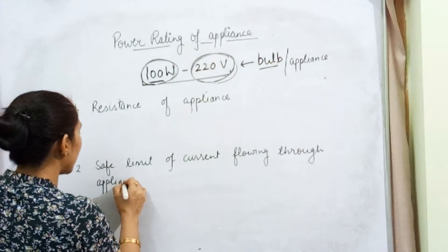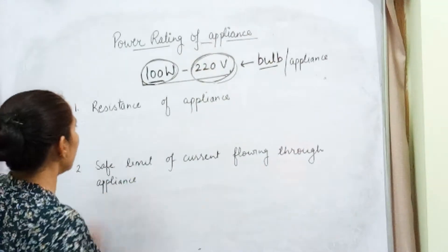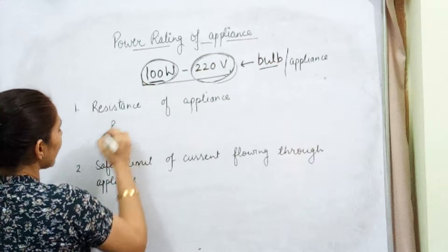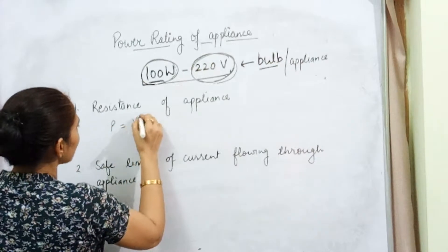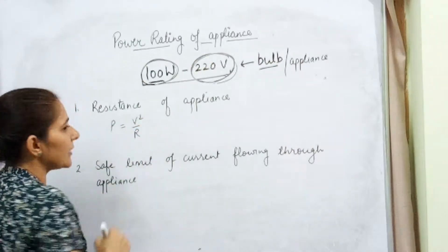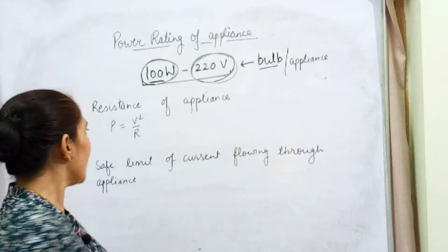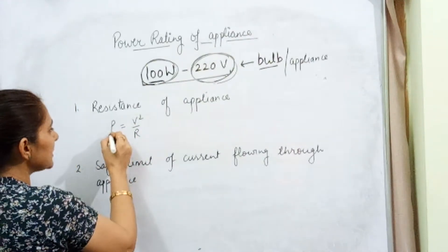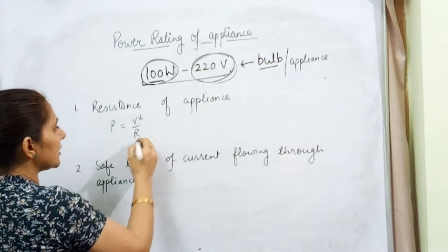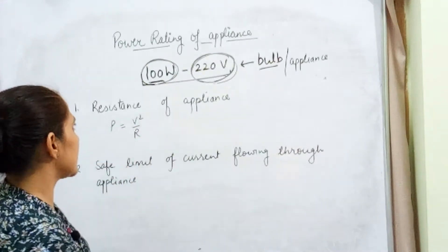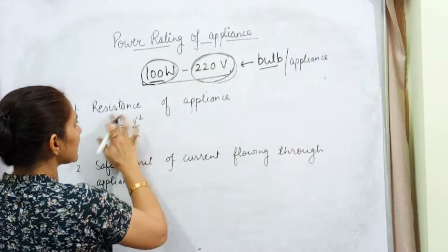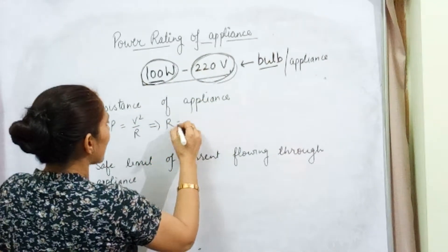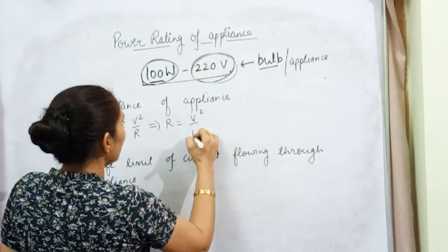How can we find out the first and second? We will do it one by one. Resistance of appliance: as we are aware, power is given by V squared upon R. Yesterday we derived this formula — power can be given by V²/R. P stands for power, V is potential difference, R is resistance. Out of these three, two are given to us. So from here, R is equal to V² upon P.